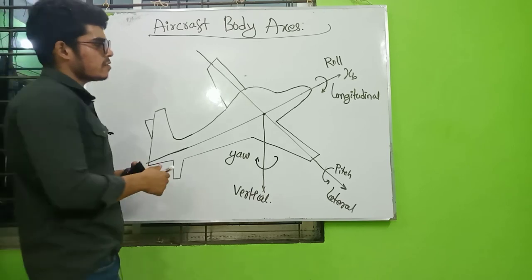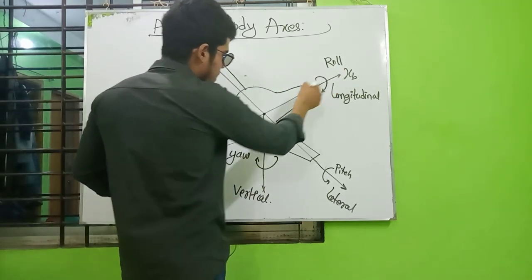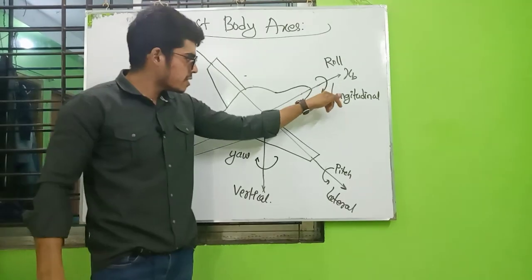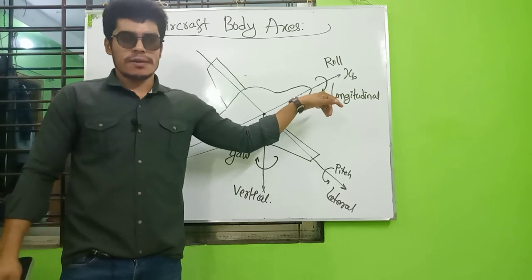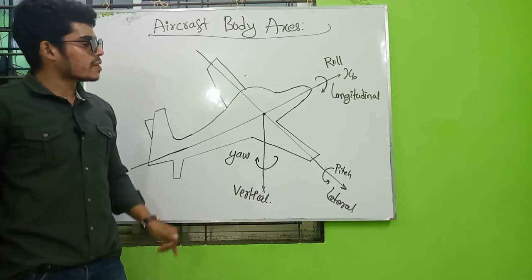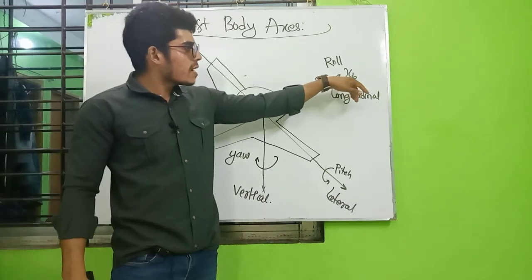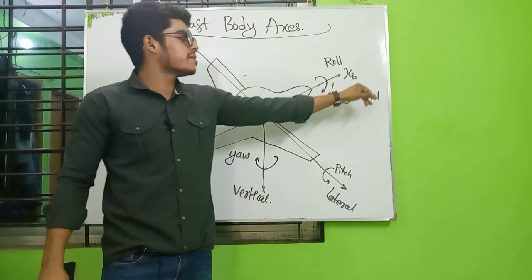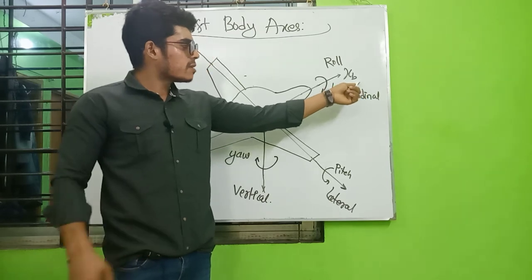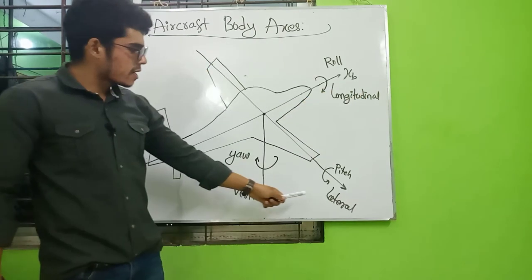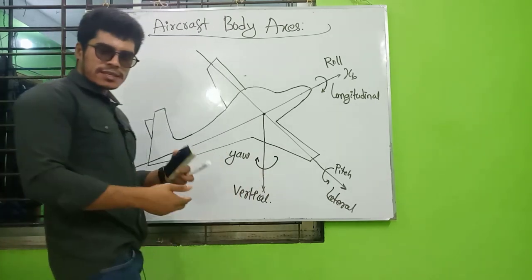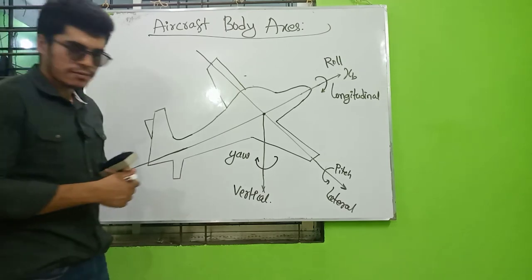This is a general figure showing the longitudinal axis. The longitudinal axis is indicated as Xb. So we indicate Xb for the longitudinal axis.